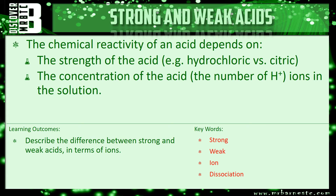So if you have a weak acid but a high concentration, it can still be highly reactive. And if you have a strong acid but a diluted one, then that might have a lower reactivity. It all comes down to both. If you're talking about how to make reactivity faster, you need to talk about the strength of the acid as well as the concentration of H+ ions.